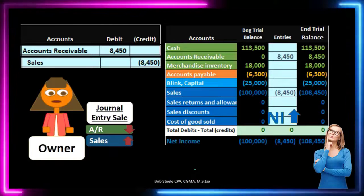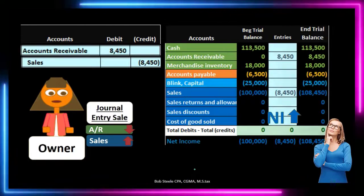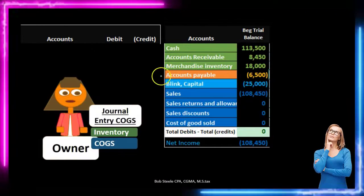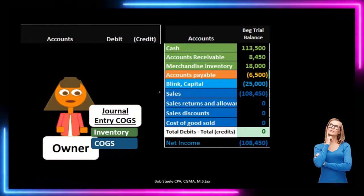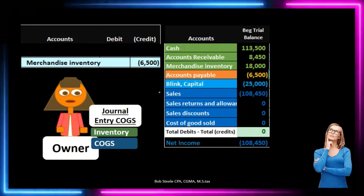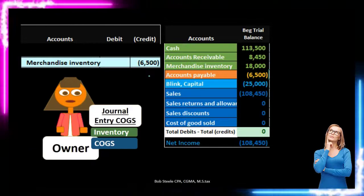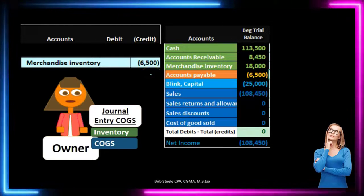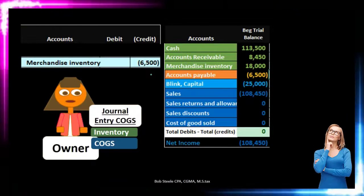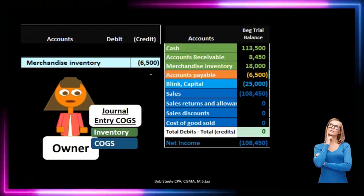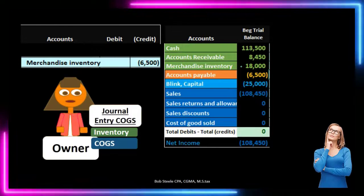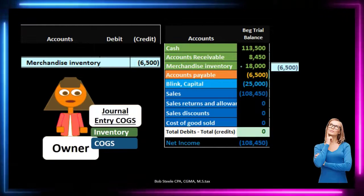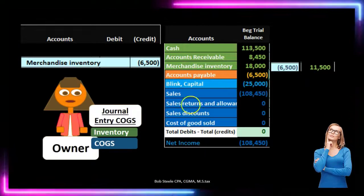However, that's not the only thing that happens when we are a merchandising company. The other side of this is that we had to give up the asset of inventory in order to generate that revenue, so we have to record the decrease in inventory. Note that the inventory is on the books for $6,500 — we sold it for $8,450, so of course we marked it up. Therefore, merchandise inventory has a debit balance and we credit it to make it go down, from $18,000 minus the $6,500 credit down to $11,500.